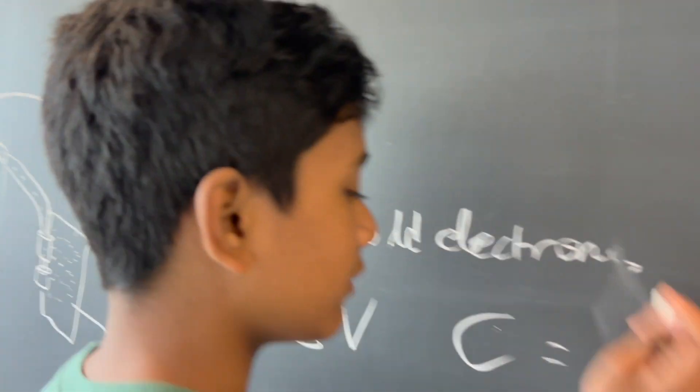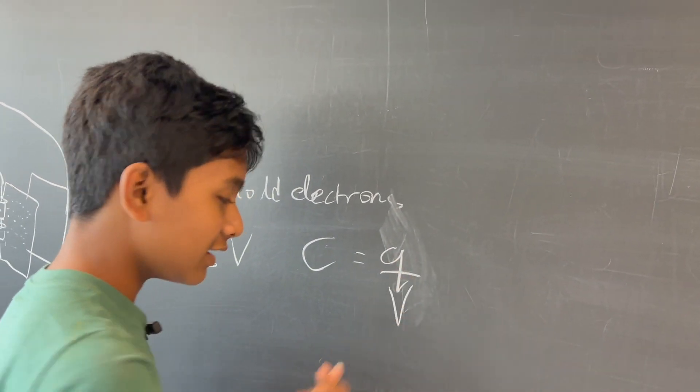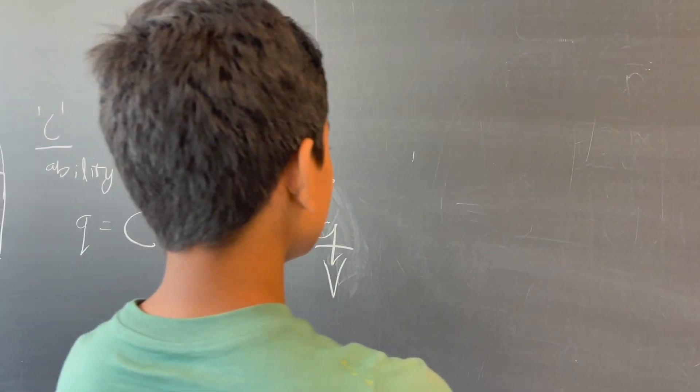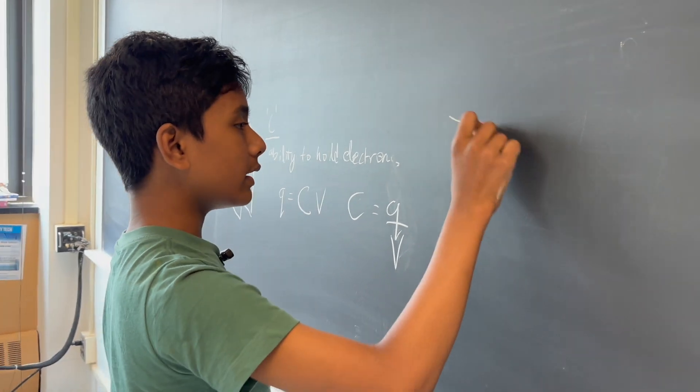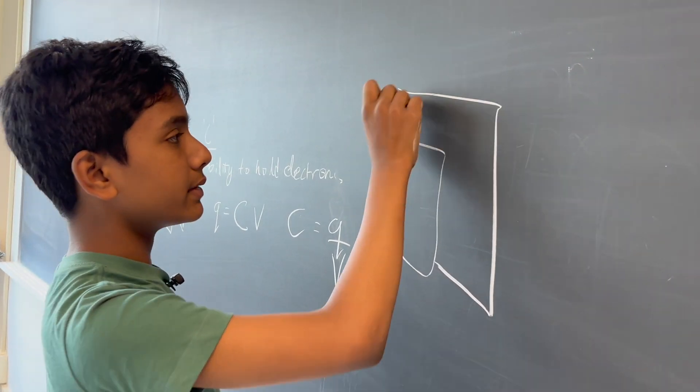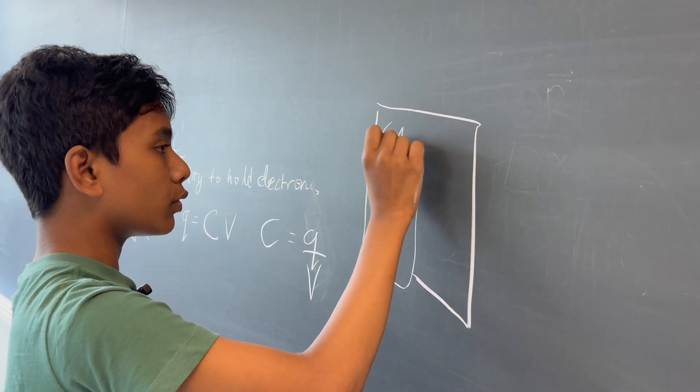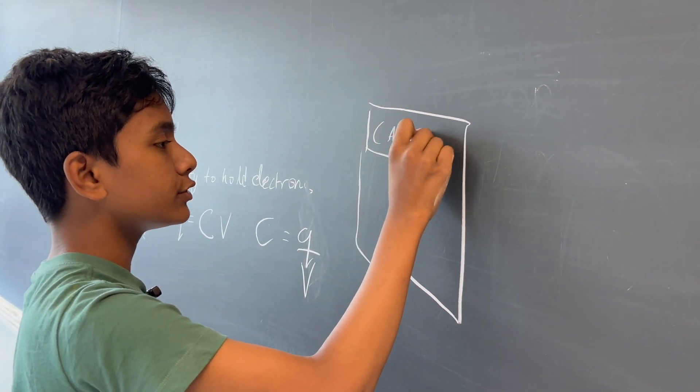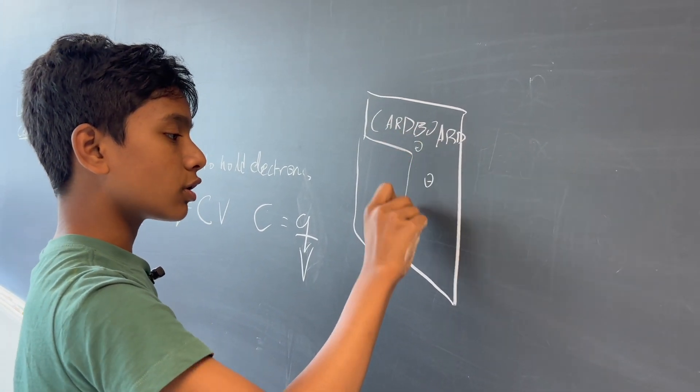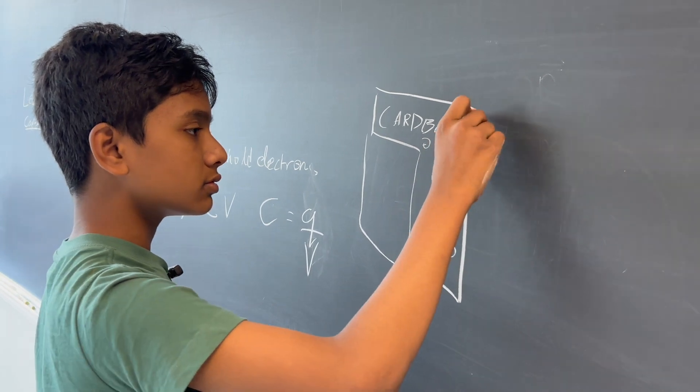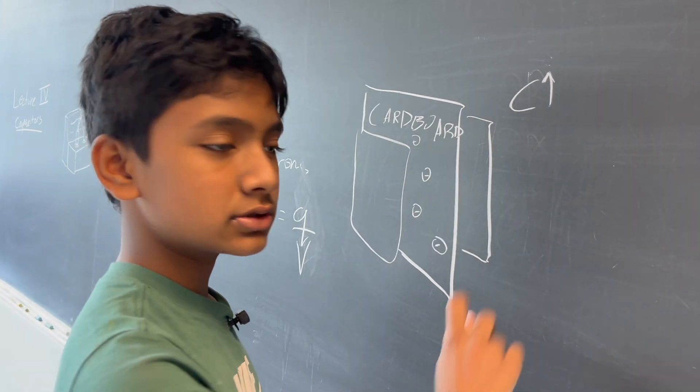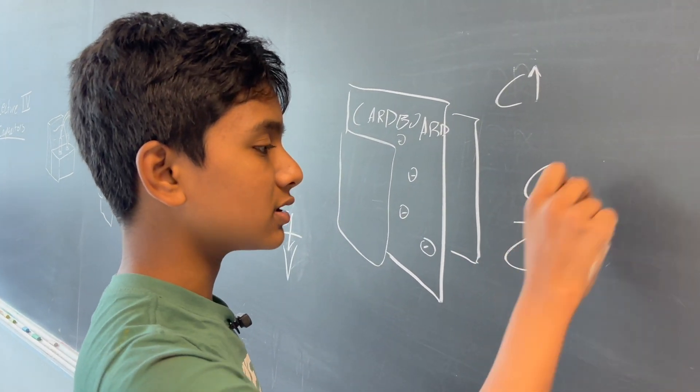By the way, if you put inside a dielectric material, for example cardboard, in between our two charged plates, this will increase the capacitance because charges are able to be stored there too. So the capacitance goes up. By what factor it goes up is called the dielectric constant.